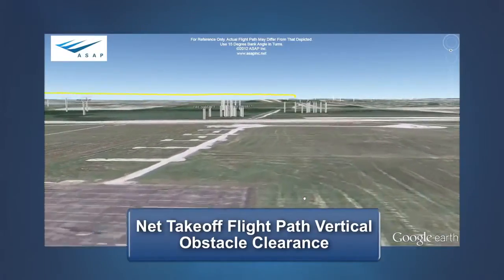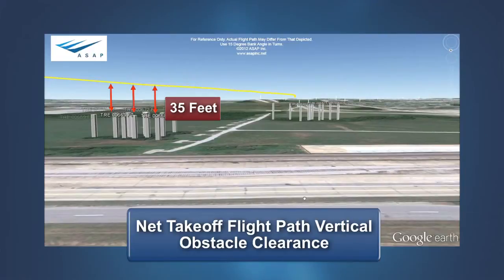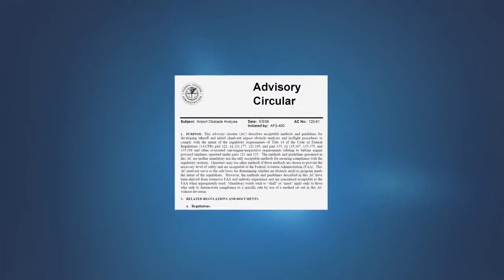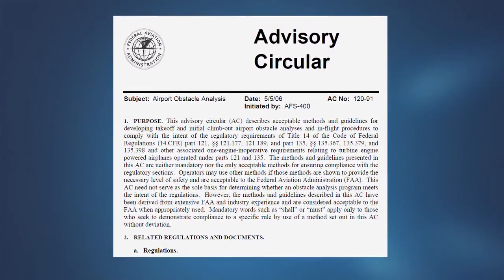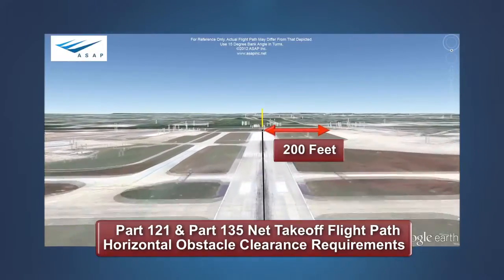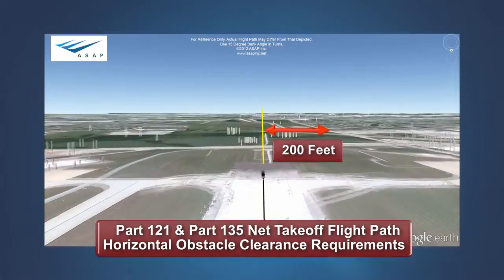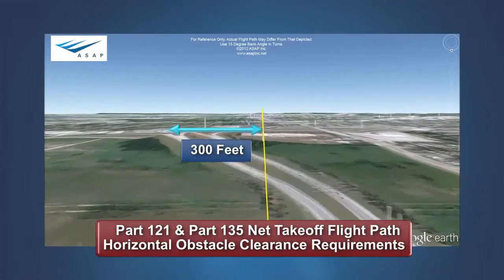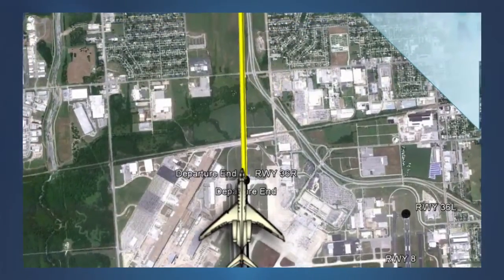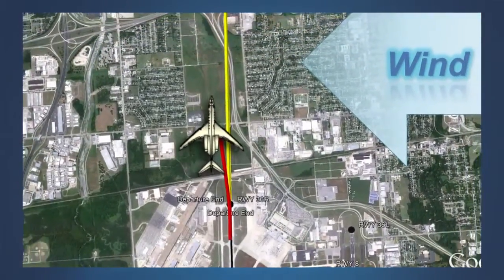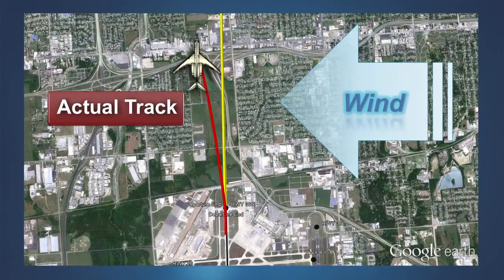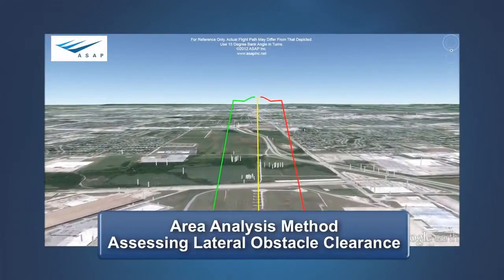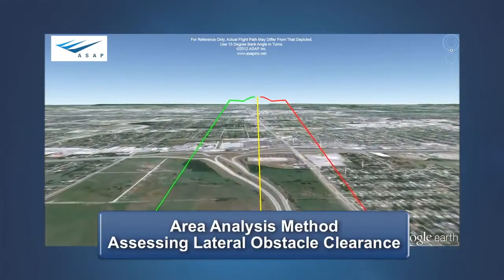Our discussion thus far has focused on how the net takeoff flight path clears obstacles by the required height, but we haven't discussed which obstacles must be cleared. To help answer this question, FAA released Advisory Circular AC 120-91, Airport Obstacle Analysis. According to the operating rules in Part 121 and Part 135, any obstacles located 200 feet on either side of the flight path within the airport boundary, or 300 feet on either side after passing the airport boundary, must be cleared vertically by the net takeoff flight path. This advisory circular, released in 2006, provides guidance on developing obstacle analysis that accounts for factors that may cause a difference between the intended track and the actual track following an engine failure.